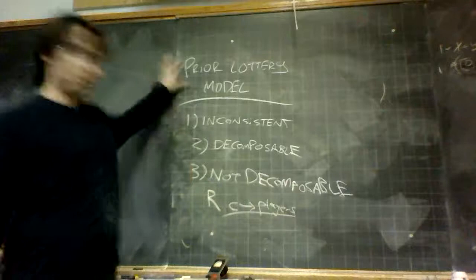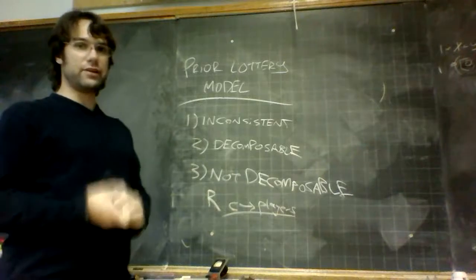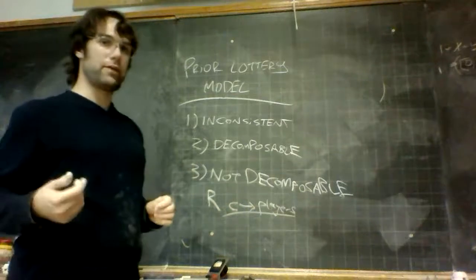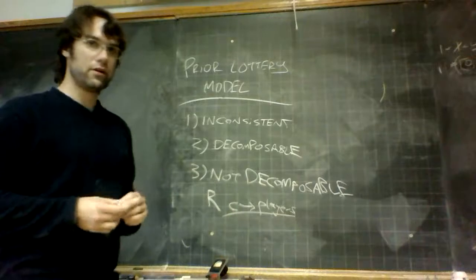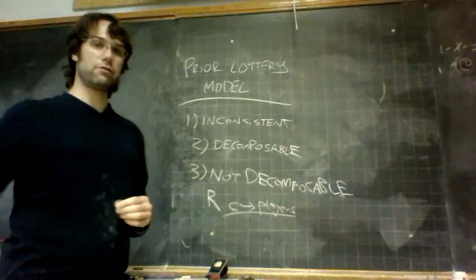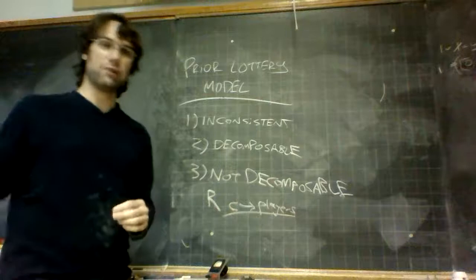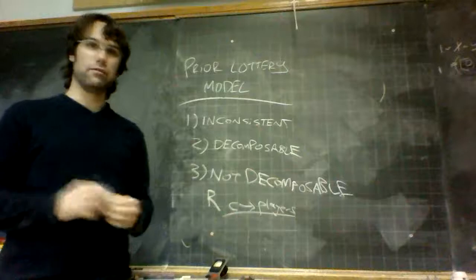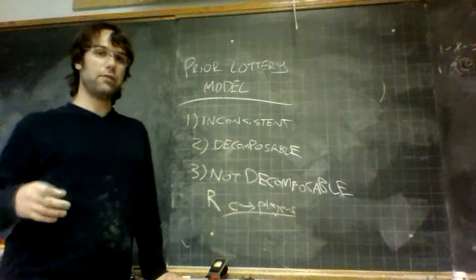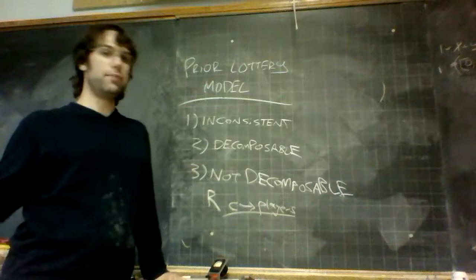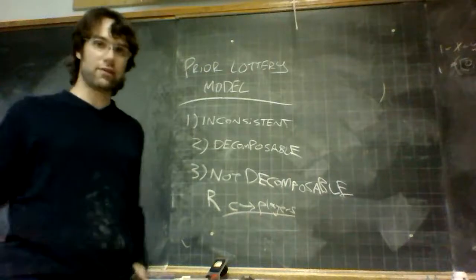It might be worth flipping back to look at the random vector model. The random vector model was all about selecting the vector of information that defined what a player had — in the US vs. Russia example, you know it's the United States versus Russia, but you don't necessarily know what Russia's production capabilities are. In the prior lottery model, you're not necessarily coming up against the actual United States and Russia. You're coming up, as the United States, against a possible Russia — a possible Russia with a little bit more production, a little bit less, a sane Russia, a Russia that is not sane, and so on.